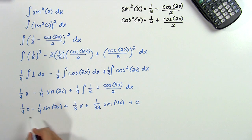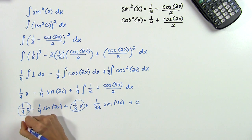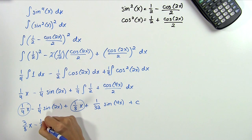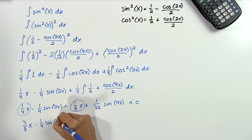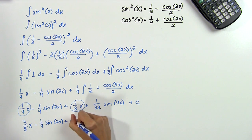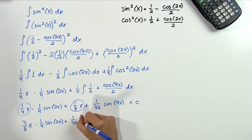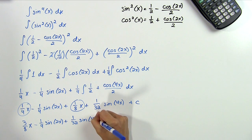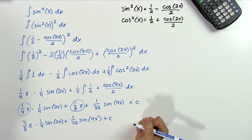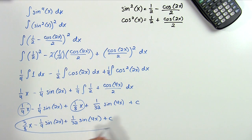Now our very last step is to combine these like terms which gives us 3 eighths x and then the rest as we have it minus 1 fourth sine of 2x plus 1 32 of sine of 4x plus c. And that's our final answer. So that's how we integrate the odd and even powers of sine and cosine. Thanks for watching!